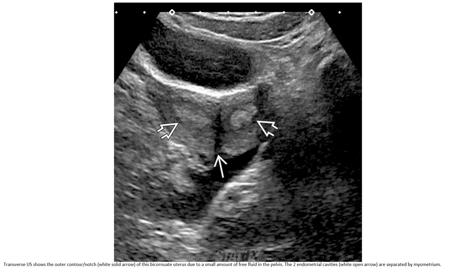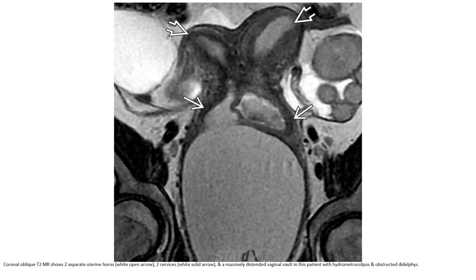The two endometrial cavities are separated by the septum. On T2 MRI, two separate uterine horns, two cervices, and a massively distended vaginal vault are seen in this patient with hydrometrocolpos and obstructive anomaly.